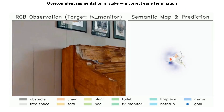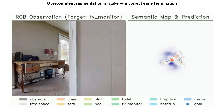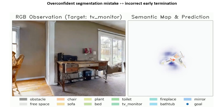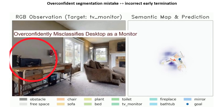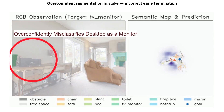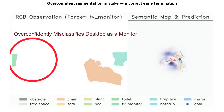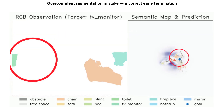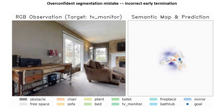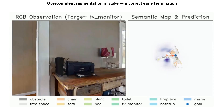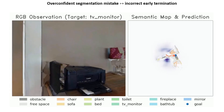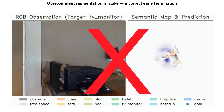We further highlight the importance of 3D semantic calibration in the object goal navigation task. Here we see an agent that builds its maps deterministically using a high-precision semantic segmentation model. A single overconfident mistake assigns the target class to an unrelated object. The agent then heads toward the wrong detection, resulting in an improper termination.